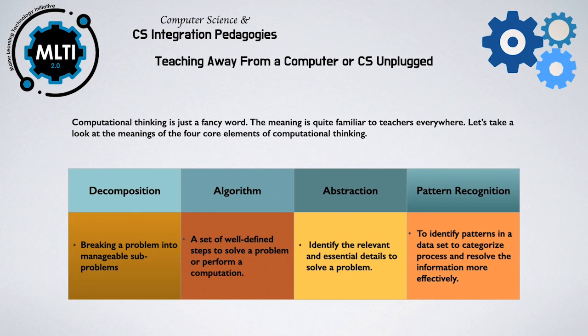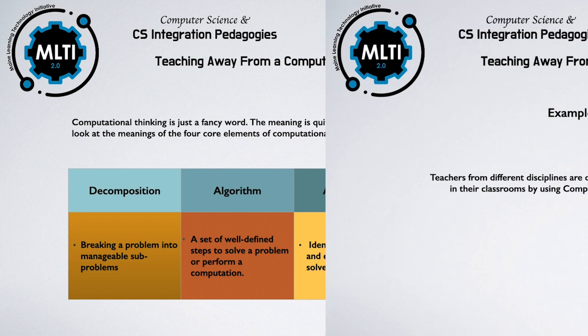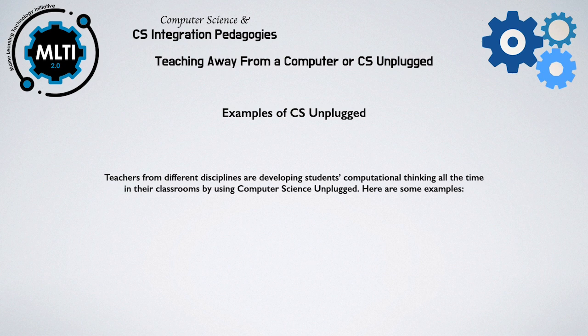CS Unplugged was intended to help students understand what a computer scientist does, and computational thinking is to think like a computer scientist. Computational thinking is not just a fancy word — its meaning is quite familiar to teachers everywhere. Let's take a look at the four core elements: Decomposition — breaking a problem into manageable subproblems; Algorithm — a set of well-defined steps to solve a problem; Abstraction — identify the relevant and essential details; and Pattern Recognition — identifying patterns in a dataset to characterize and resolve information more effectively. Teachers from different disciplines are developing students' computational thinking all the time in their classrooms.